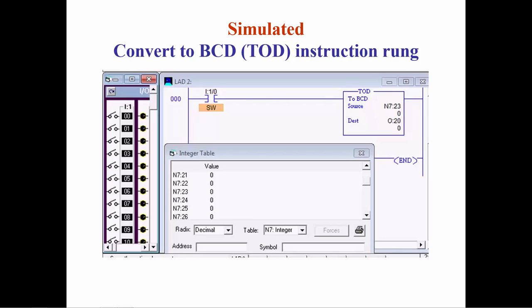In the simulation we will enter the decimal 10 in the address for the source. When the switch is closed, the BCD instruction will convert the binary value for 10 decimal into the BCD value for 10 decimal. The decimal equivalent of the BCD code is 16.